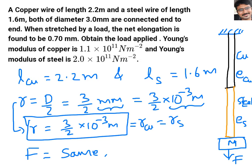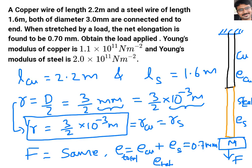The total elongation is copper elongation plus steel elongation, which is given as 0.7 millimeters. So E_total = 0.7 × 10⁻³ meters in SI units. Since they are in series, force is the same and cross-sectional area is also the same for both wires.